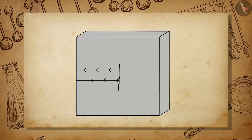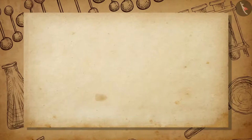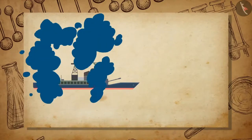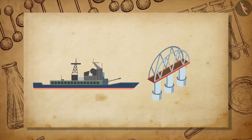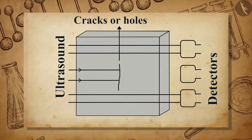Ultrasonic sounds are also used to detect cracks and holes inside metal blocks which are invisible from outside, like the metals used in the construction of ships, bridges, and other scientific equipment. Ultrasonic sounds are passed through the metals to check the presence of any holes or cracks, and detectors are used to detect any transmitted waves.